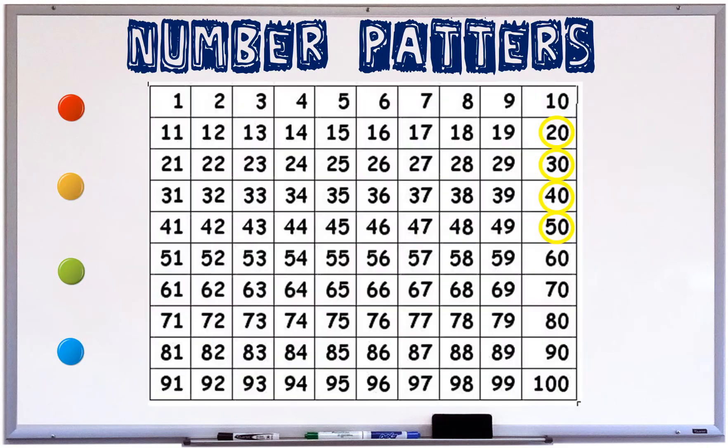Number patterns. Everyone knows that number patterns are everywhere. Just look at the number line: 1, 2, 3, 4, 5, 6, 7, 8, 9, 10 is a pattern. Look at those yellow circles: 20, 30, 40, 50. That is a pattern.